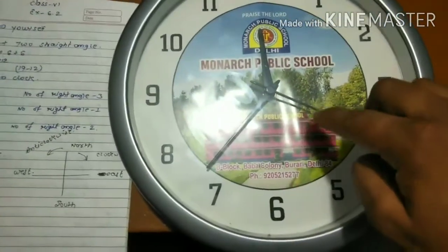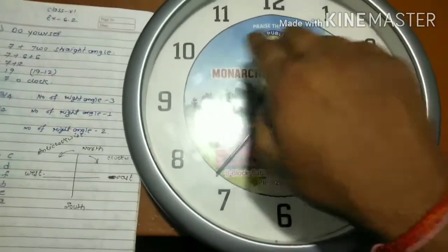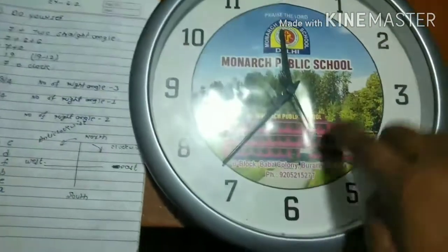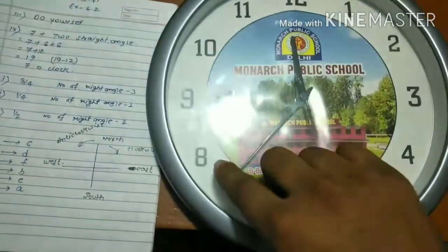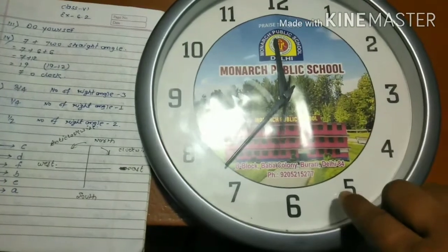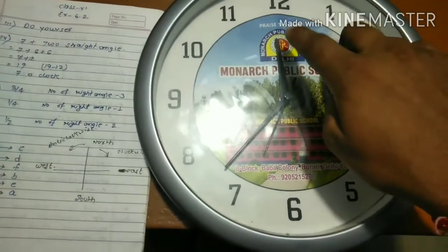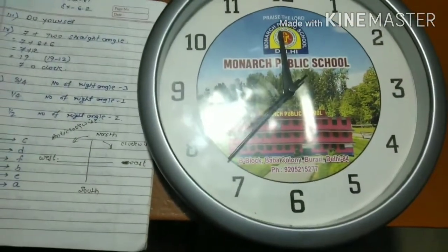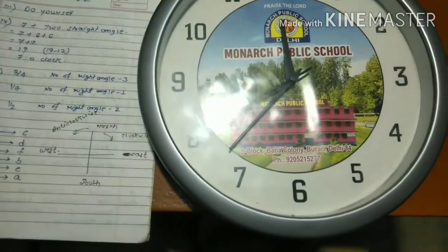If we go opposite, north to west this way, this is called anticlockwise. This means on a clock, 12 to 1, 2, 3, 4 is clockwise. 12 going backwards to 11, 10, 9, 8 is anticlockwise.